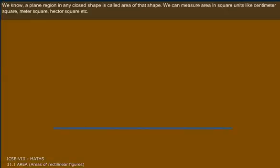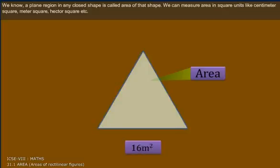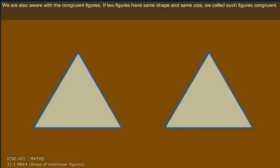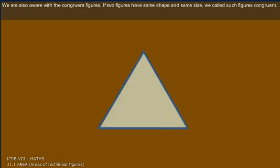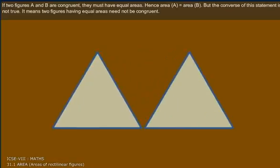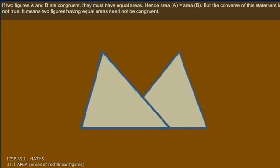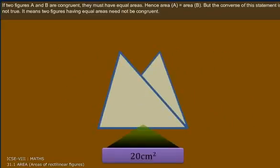We know a plane region in any closed shape is called as Area of that shape. We can measure area in square units like centimeter square, meter square, hectare, etc. We are also aware with the congruent figures. If two figures have same shape and same size, we call such figures congruent. If two figures A and B are congruent, they must have equal areas. Hence, Area A is equal to Area B. But the converse of this statement is not true — it means that two figures having equal areas need not be congruent.